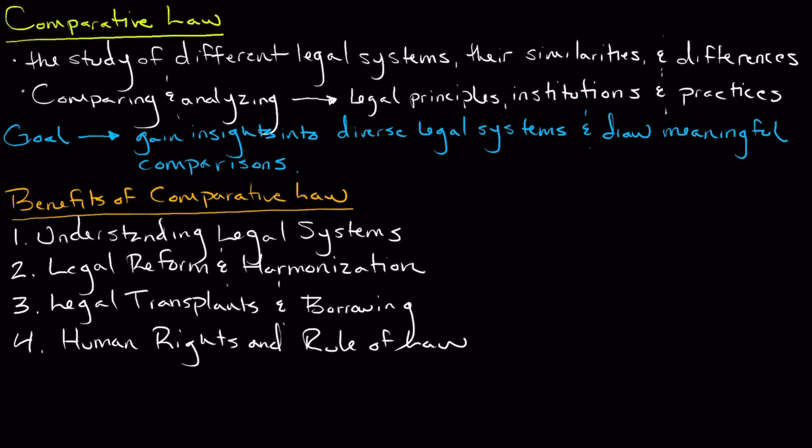Now that we understand the benefits of comparative law, we're going to talk about the two main approaches. The first is called legal families. Comparative law classifies legal systems into families based on shared characteristics such as civil law tradition, common law tradition, Islamic law, or socialist law. This approach highlights the historical and cultural factors that shape legal systems within a particular family.